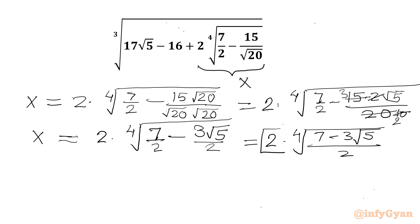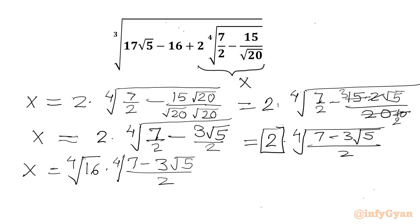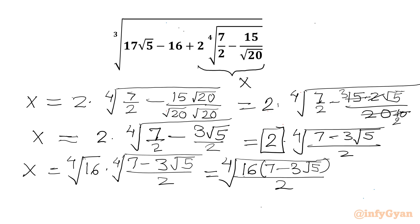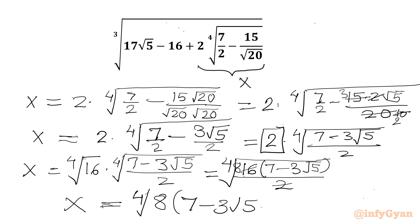Now I can consider this 2 as 4th root of 6 times 4th root of 6, giving us 4th root of 6 times 4th root of 6 times 4th root of 7 minus 3√5, all over 2. Now I will combine both radicands: 4th root of 6 times 4th root of 6 times 4th root of 7, minus 3√5, divided by 2. Since 6 times 6 times 2 in the denominator gives 8, x becomes 4th root of (8 times 7 minus 3√5), or 4th root of (56 minus 24√5).